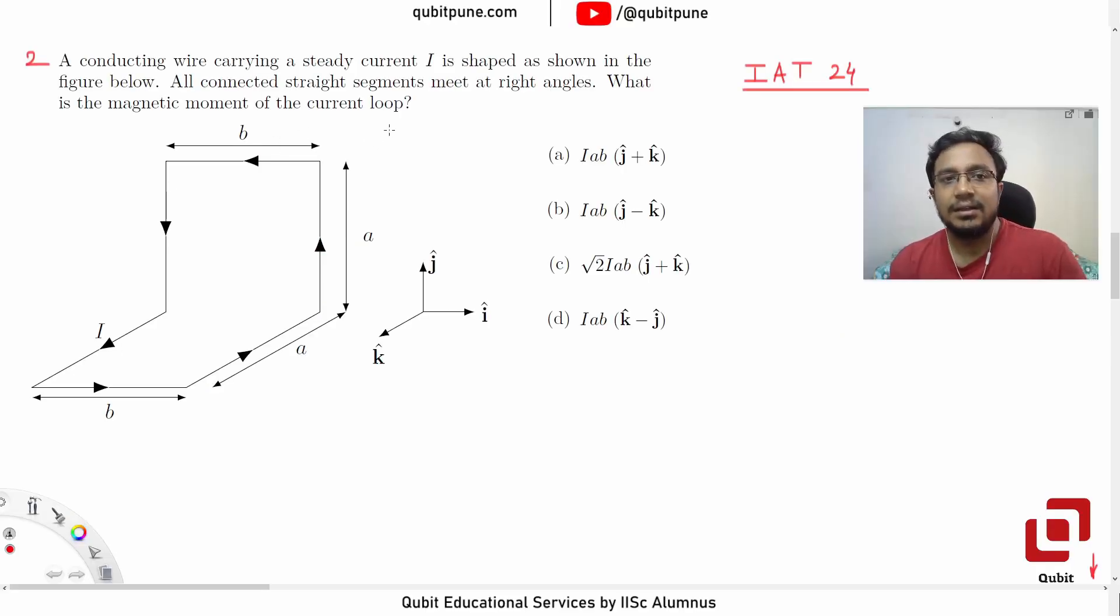A conducting wire carrying a steady current I is shaped as shown in the figure below. All connected straight segments meet at right angles. What is the magnetic moment of the current loop?